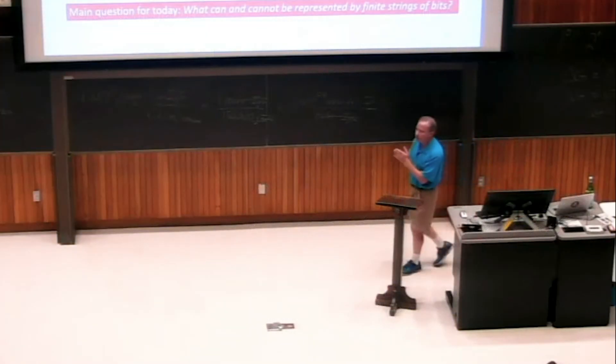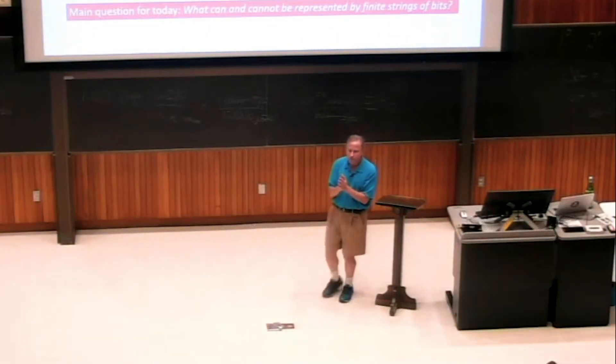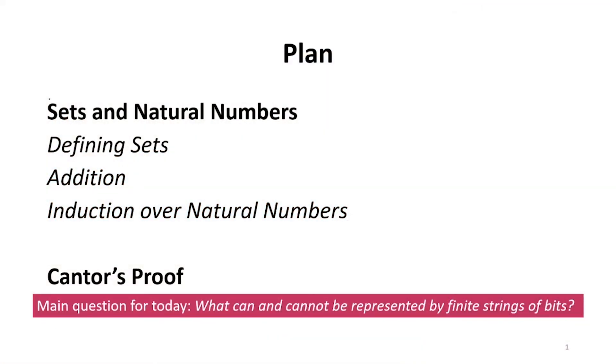Last class we started talking about natural numbers, so we'll continue from there, building up from that to get to this question about infinities and try to understand what are the things that can and cannot be represented by finite strings of bits.